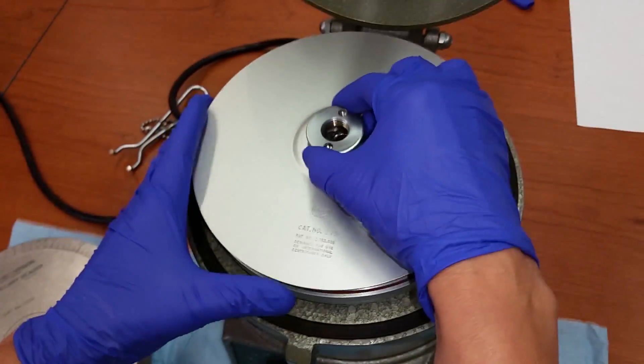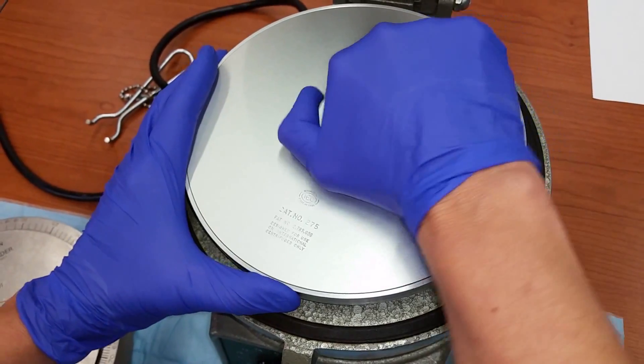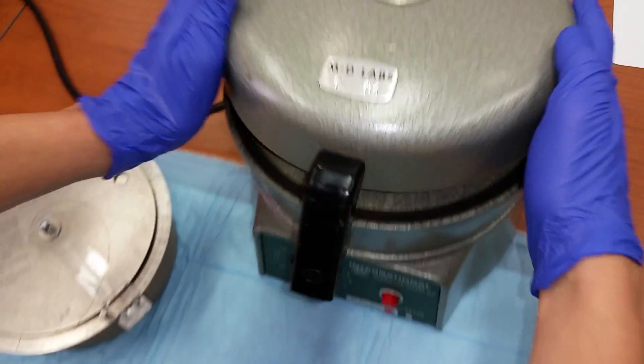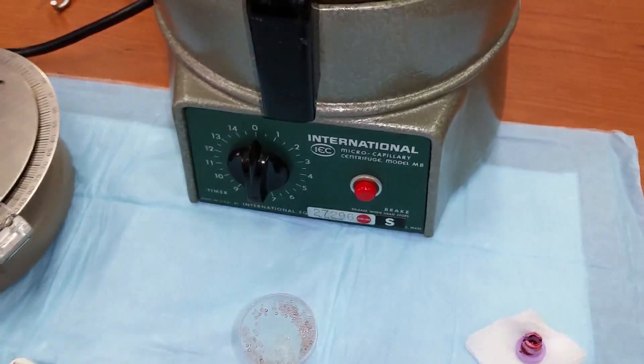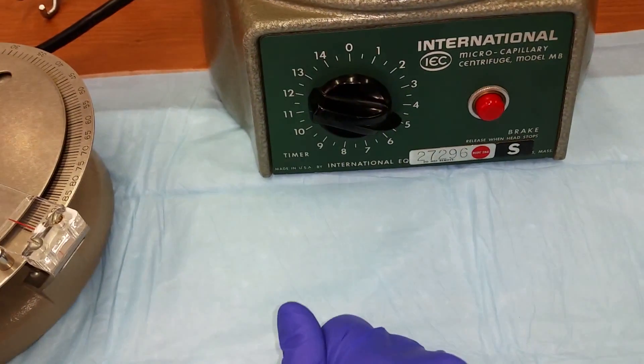Make sure that you close the top of the centrifuge. Otherwise, during spinning, all the tubes will break. Close the top of the centrifuge, lock it, and then spin for approximately five minutes.